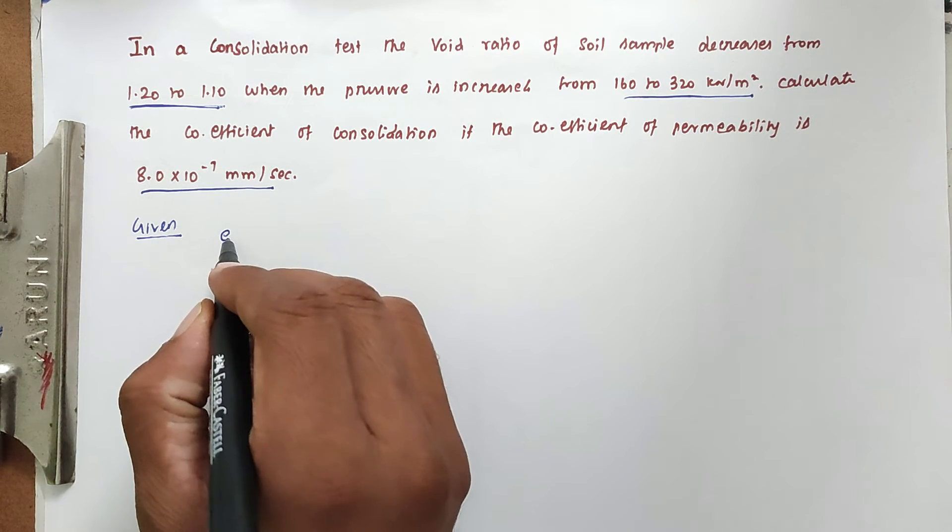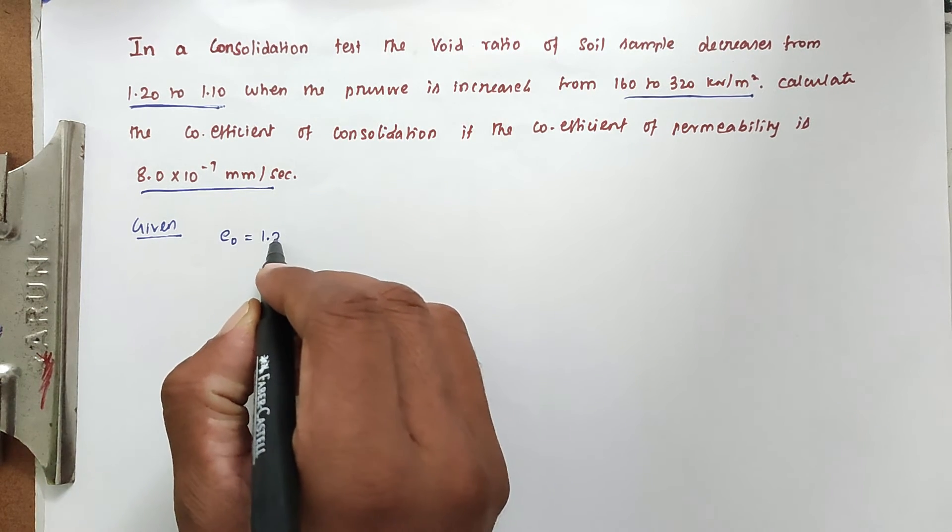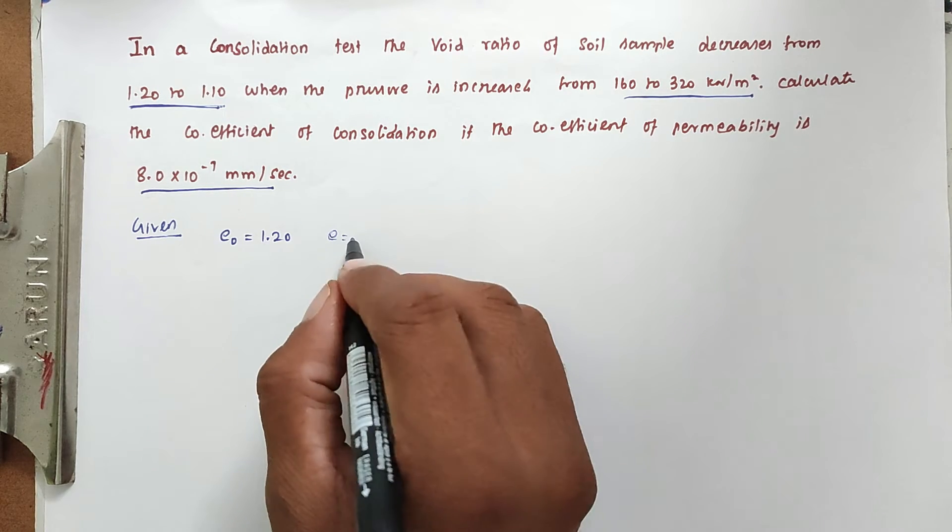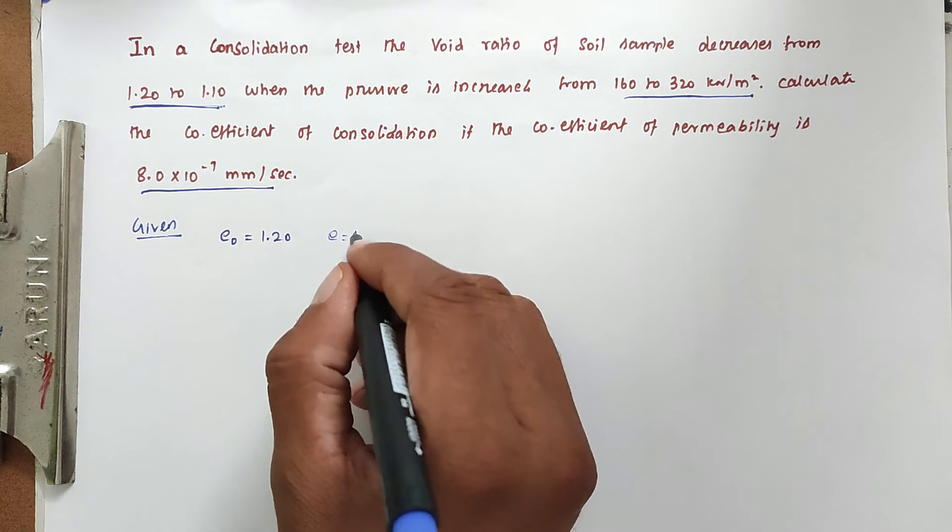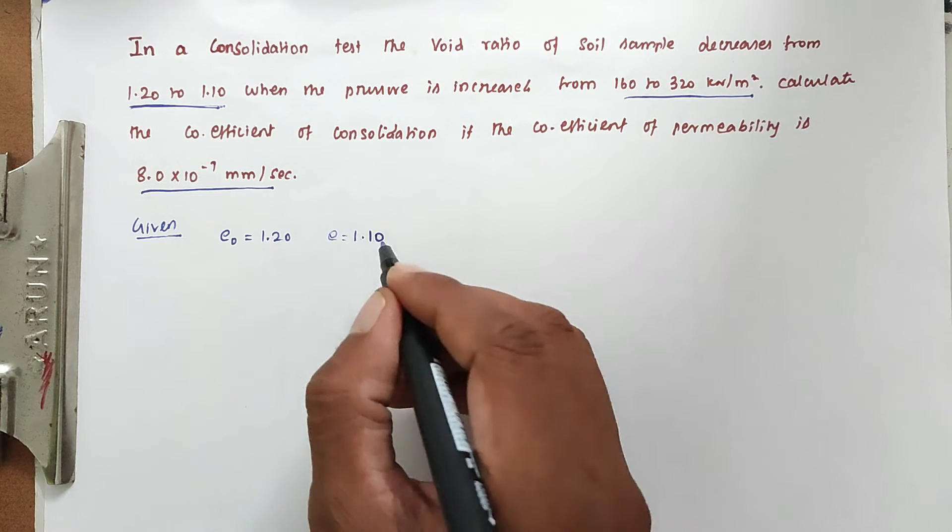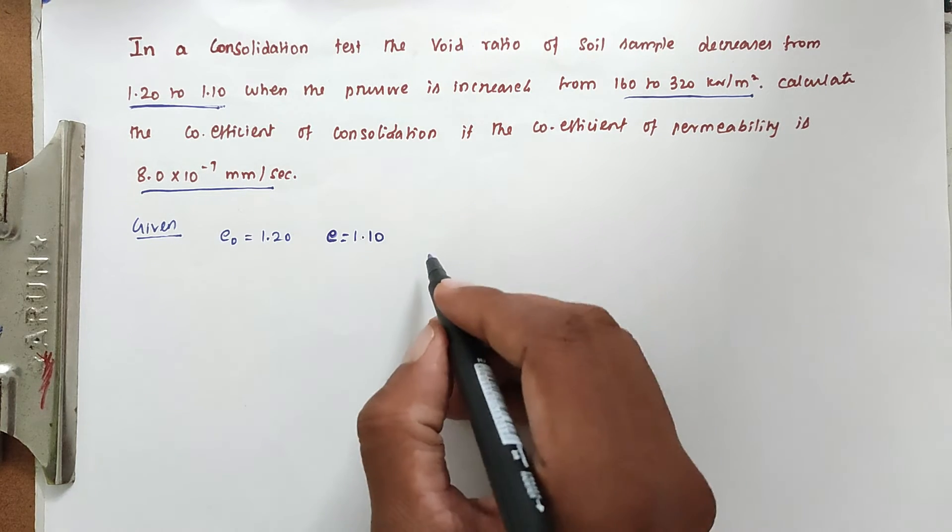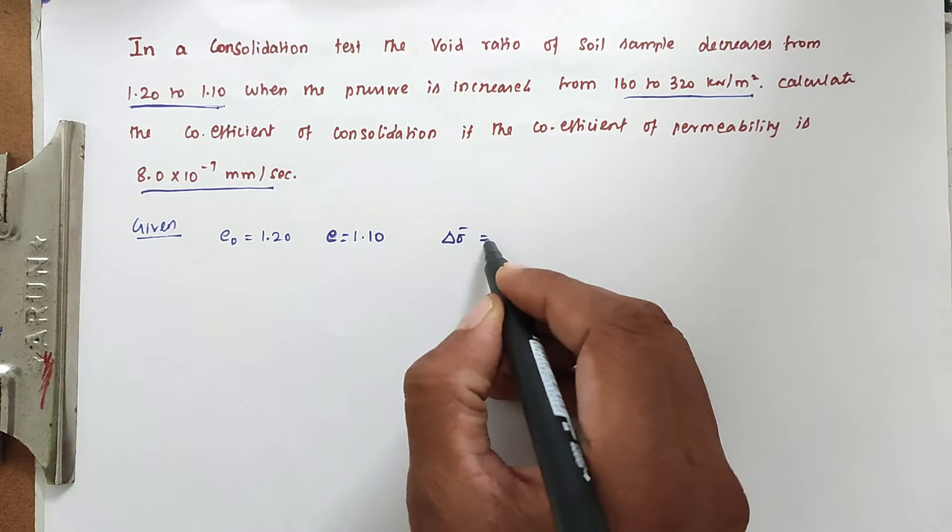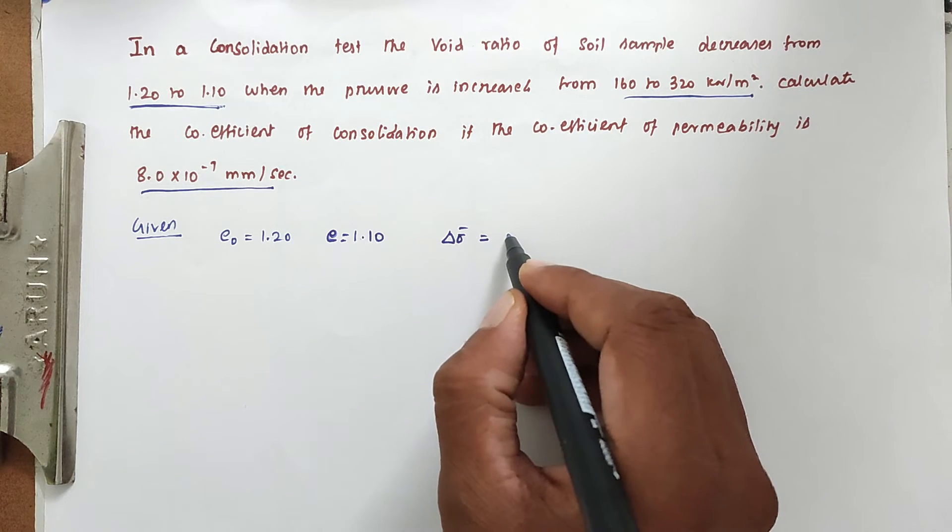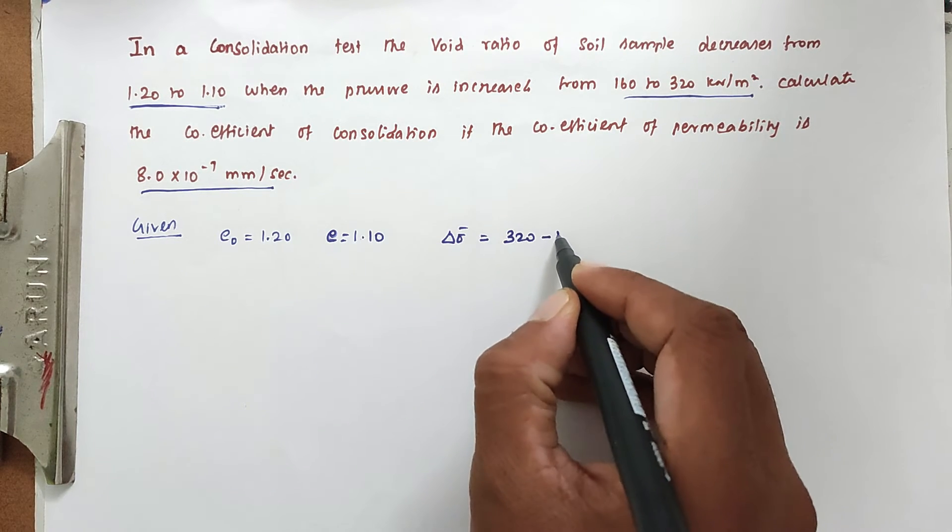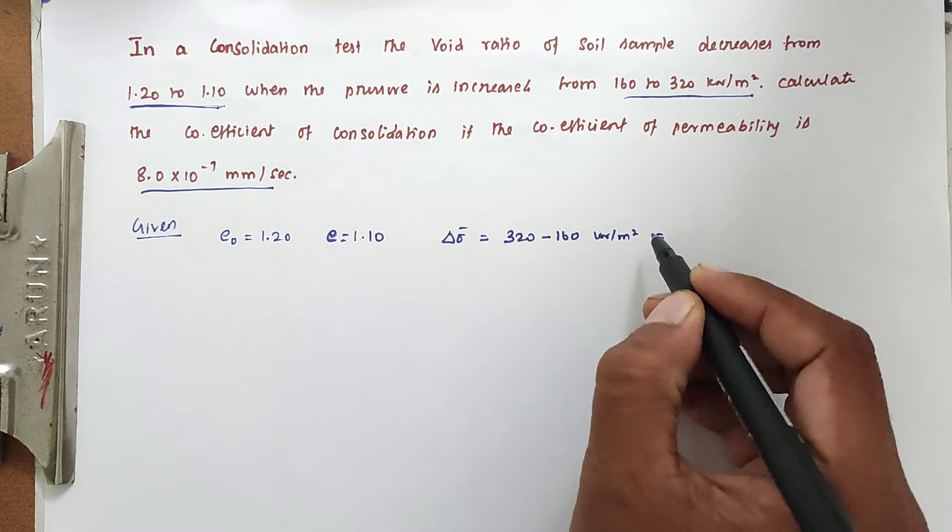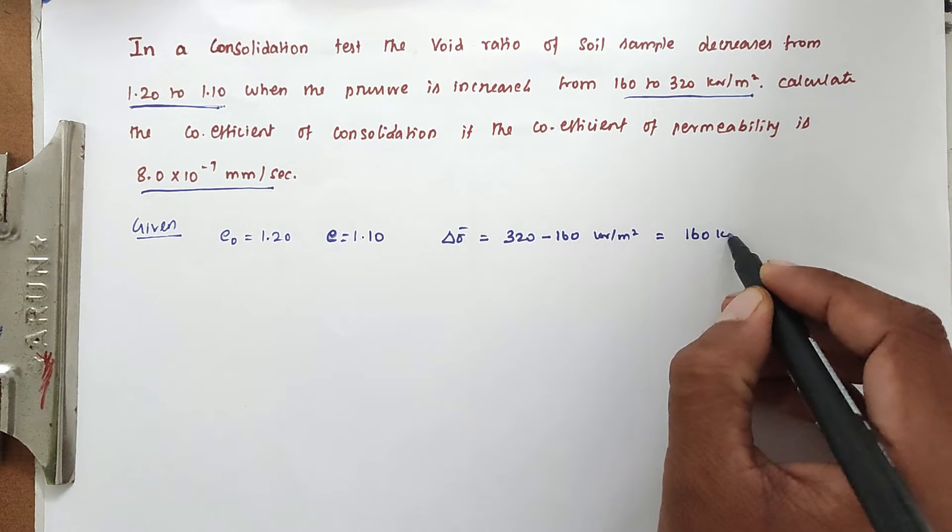So now the given values: initial void ratio e₀ is 1.20, final void ratio e₁ equals 1.10. Next thing is pressure. The change in pressure ΔσΔ equals 320 minus 160 kilonewton per meter square, which equals 160 kilonewton per meter square.